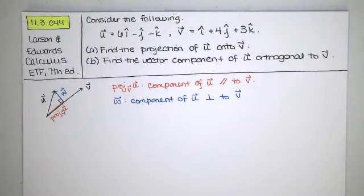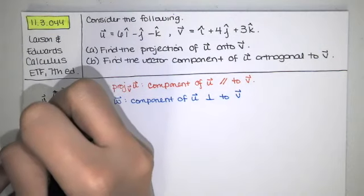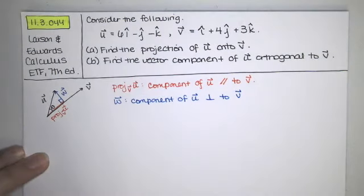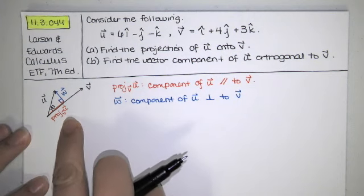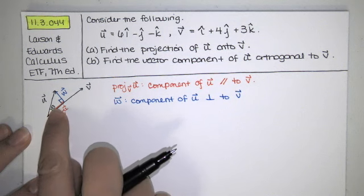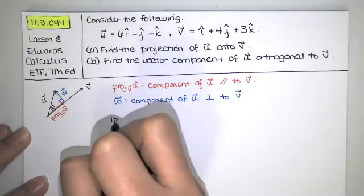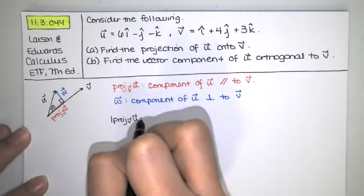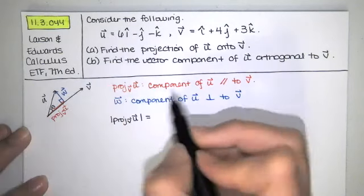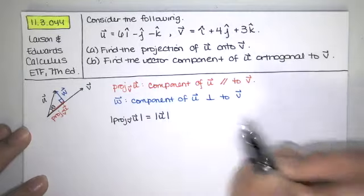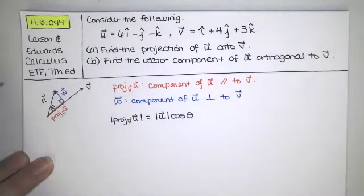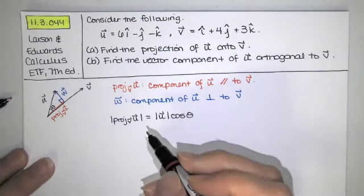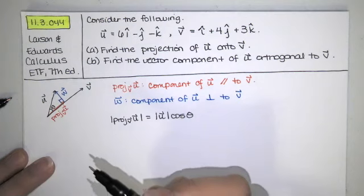These are actually really easy to find. The formulas were derived at the beginning of the semester. I think I'll just derive them for you again pretty quickly. We know that the length of the projection of u onto v can be given easily if we know this angle theta. The length of the projection of u onto v is just the magnitude of u times the cosine of theta because that's the adjacent side.